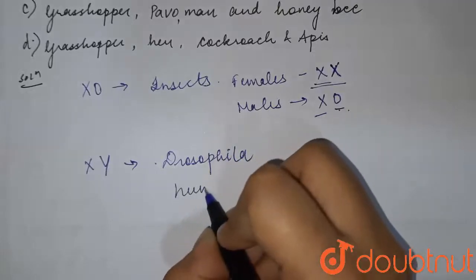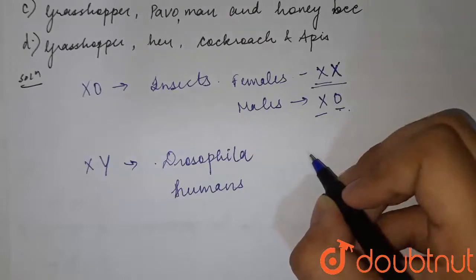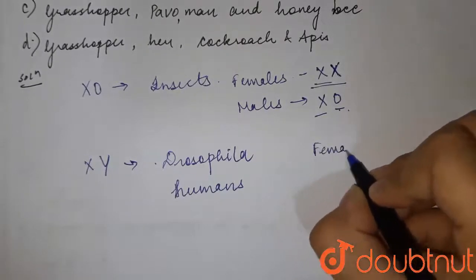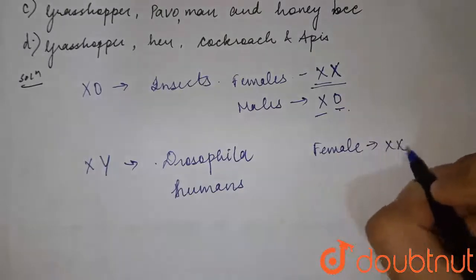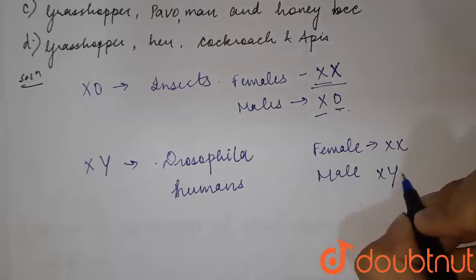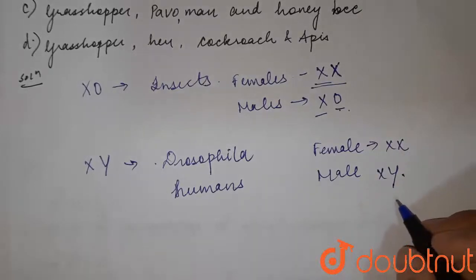In Drosophila, the female chromosomes are XX and the male is XY, respectively. So this is the kind of sex determination seen in Drosophila and humans.